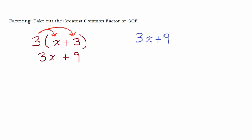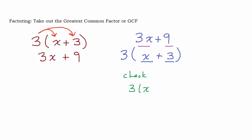So we look and say, how many terms do we have here? We've got two terms: 3x and 9. What factors do those two terms have in common — what's a number or variable that will go into both of those? In this case, it's 3. So you write it outside the parentheses, setting up your reverse distribution. Then think: 3 times what is 3x? That's x. And 3 times what is 9? That's 3. You can always check your answer by distributing — take 3 times (x plus 3) and you should end up with what you started with. And we do, so we know we've taken out the greatest common factor.